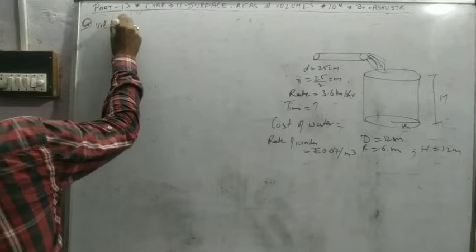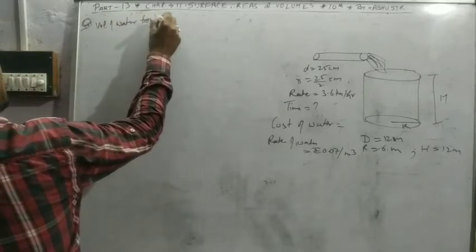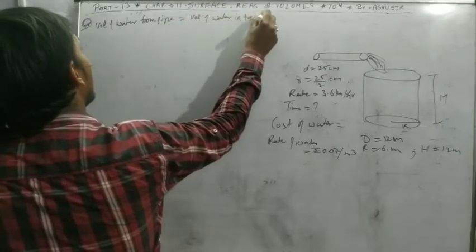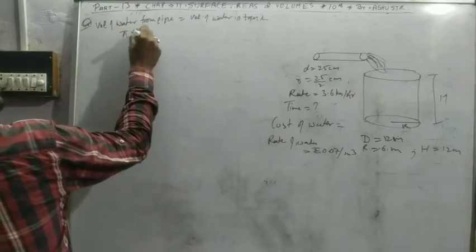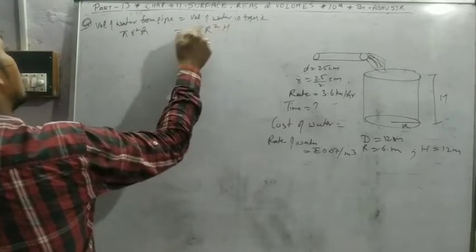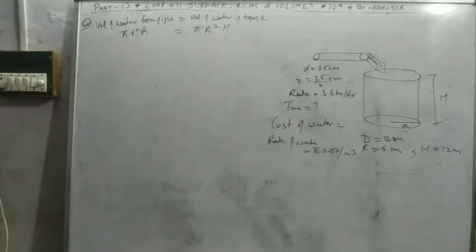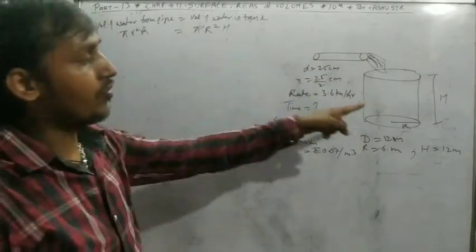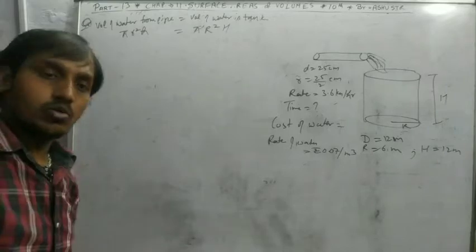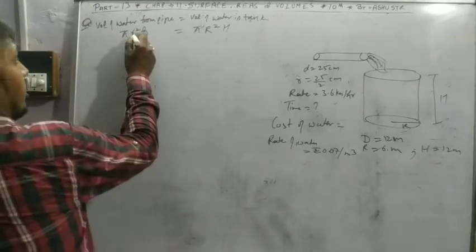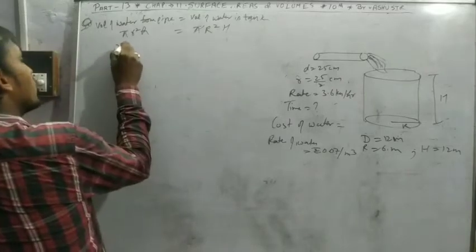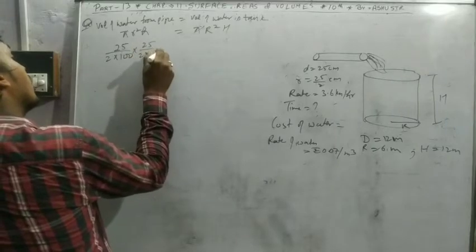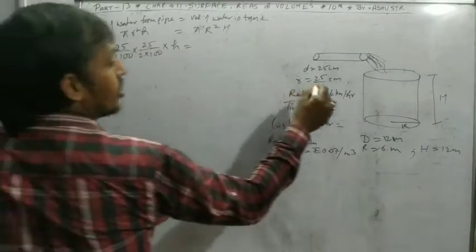Volume of water from pipe equals volume of water in tank. That is π r² h equals π R² H because both are cylindrical shapes. The formula is the same but the indication is different. We take small r for pipe and capital R for tank. We solve all values in meters: radius 25 divided by 2 divided by 100 to convert centimeters to meters.